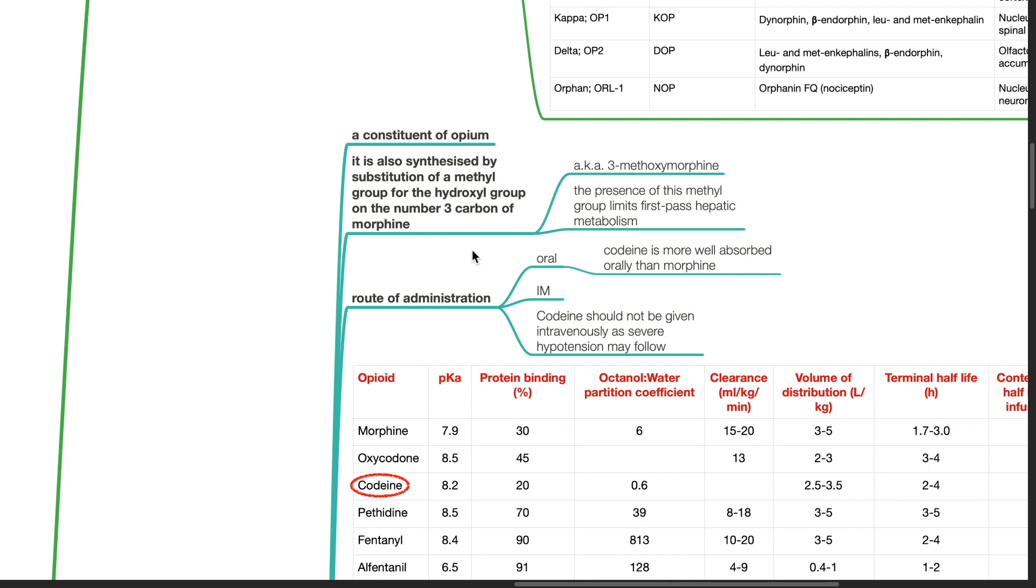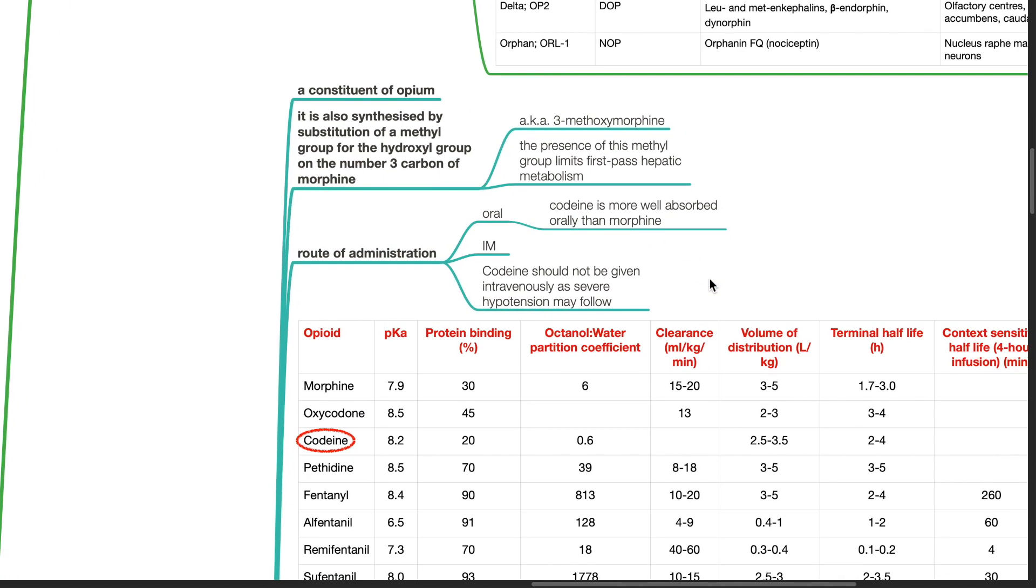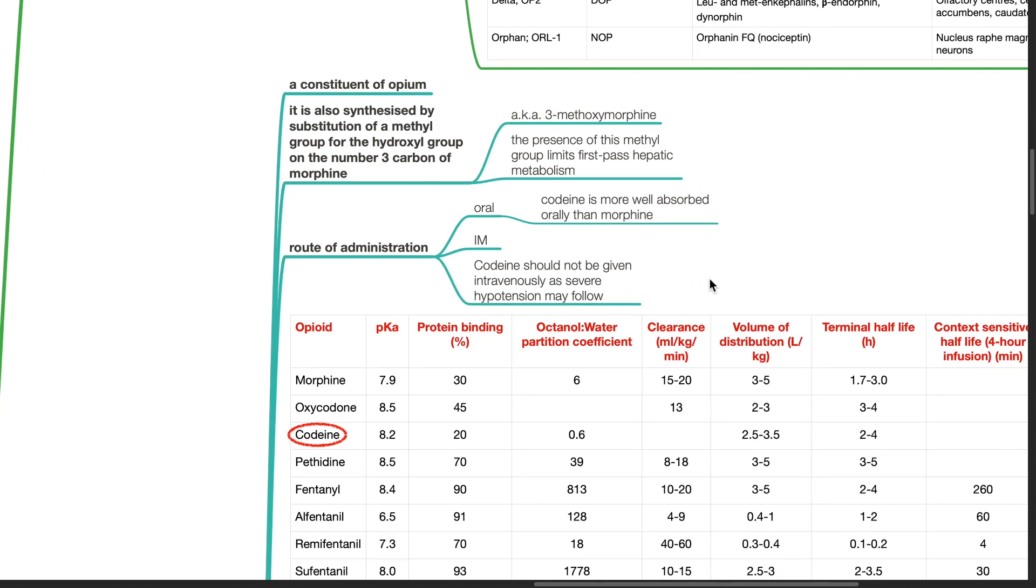Route of administration: oral and IM. Codeine is more well absorbed orally than morphine. Codeine should not be given intravenously as severe hypotension may follow.